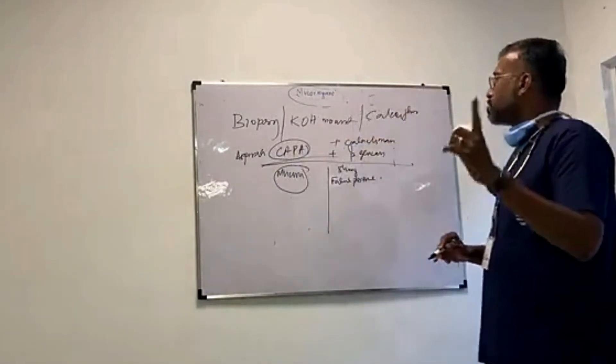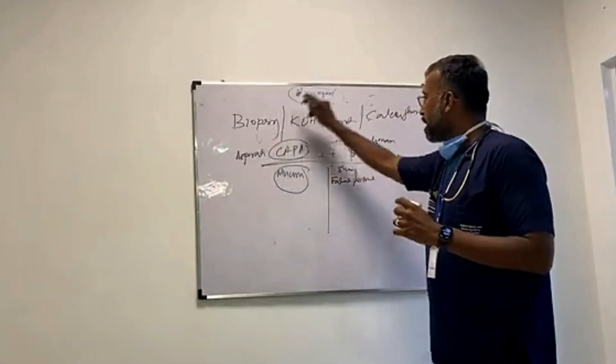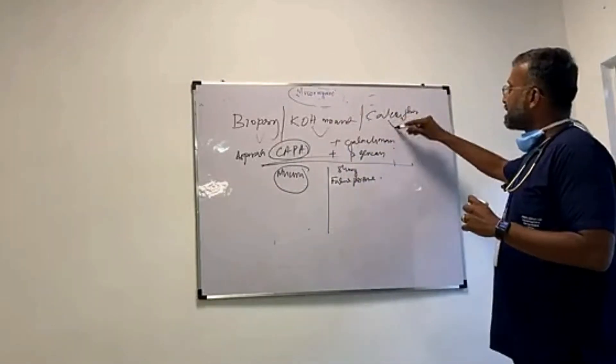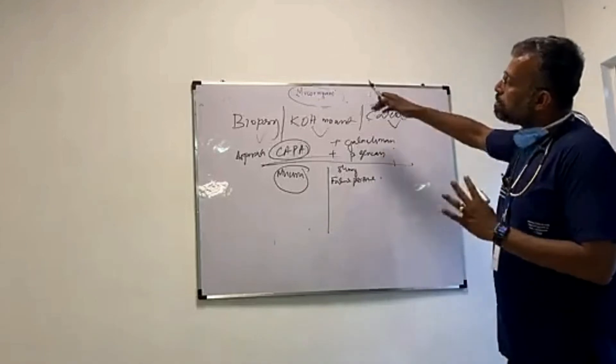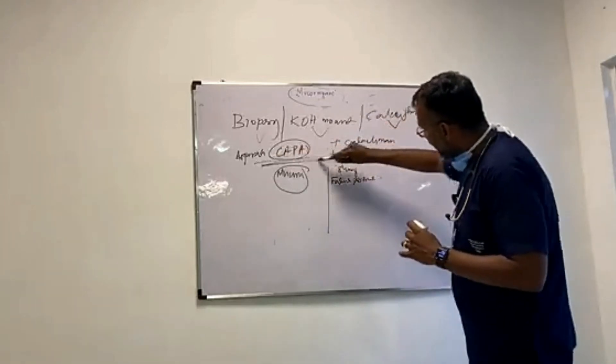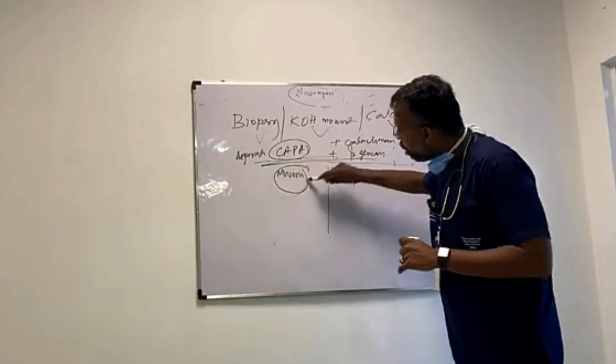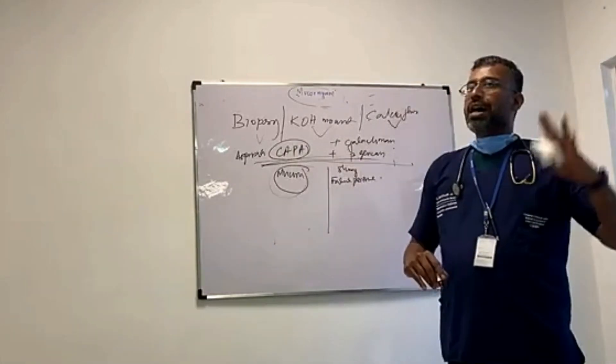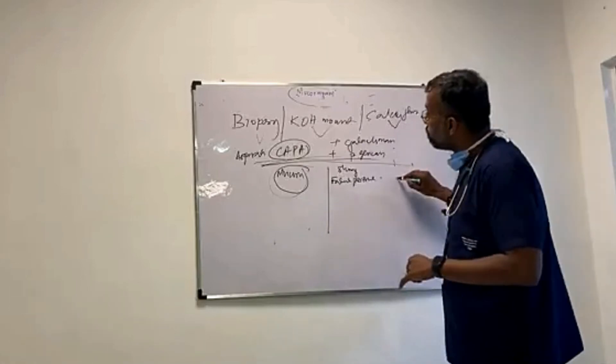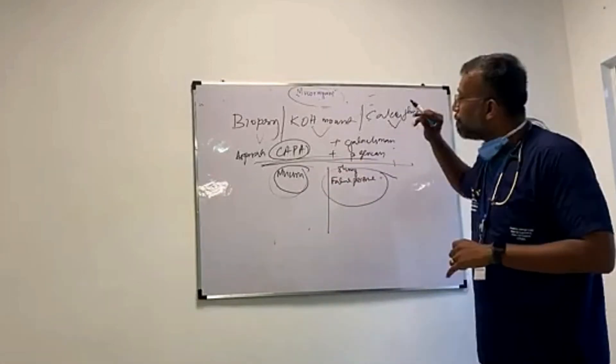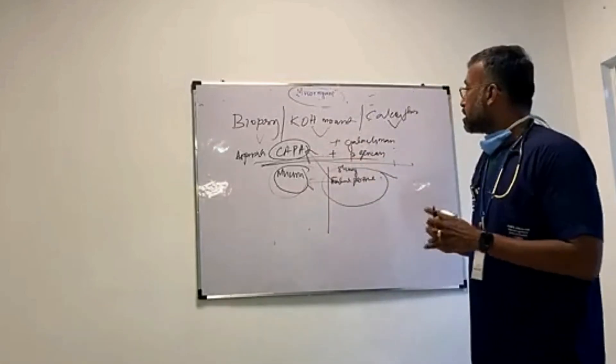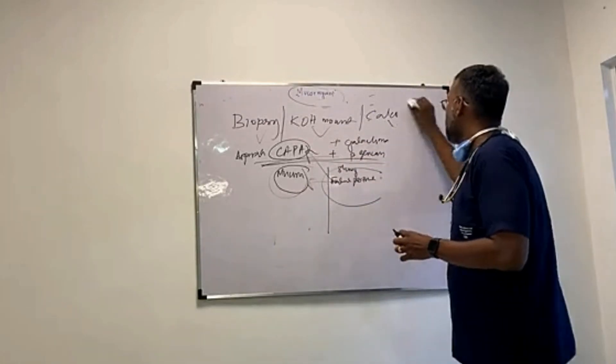So, diagnosis: clinical suspicion is the first. Then, by biopsy, KOH mount and calcofluor stain and how to differentiate between CAPA and mucor. And, always remember, when you are using antibiotics, IL-6 suppressants, there could be a false positive. But, still don't think CAPA, think mucor because it is common in India.